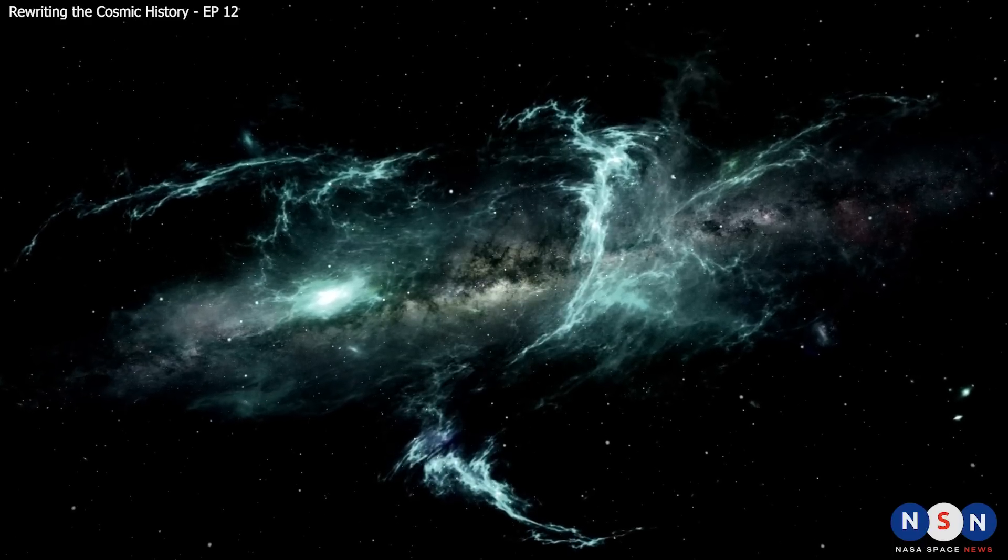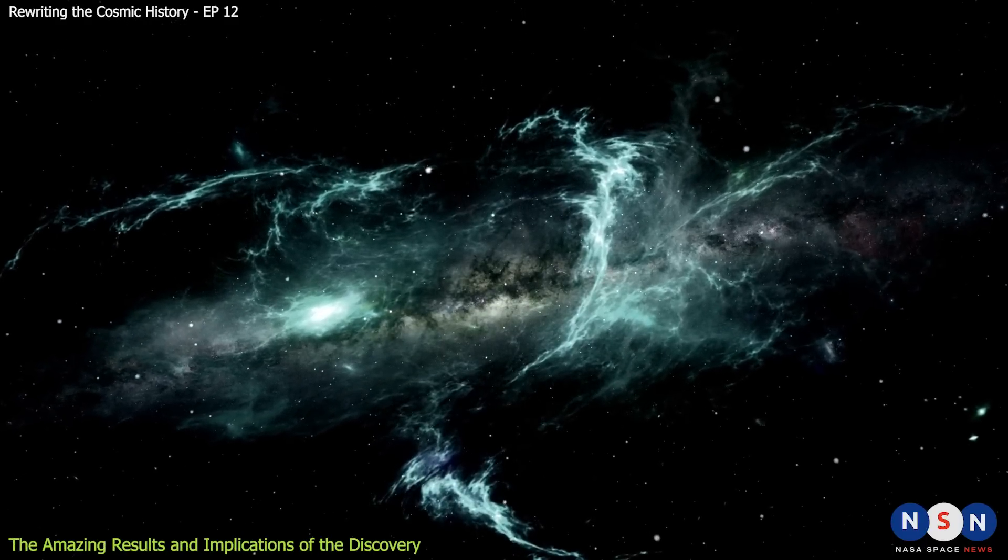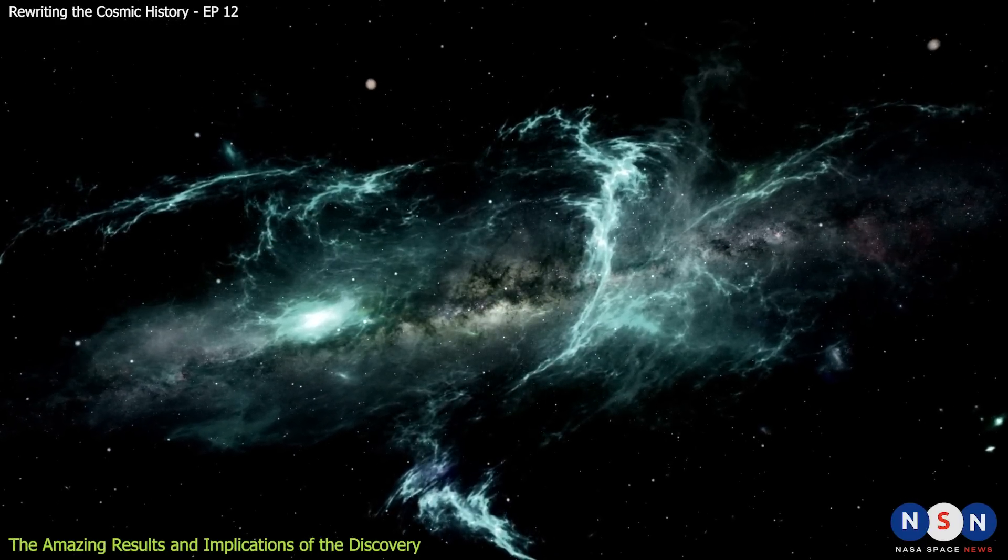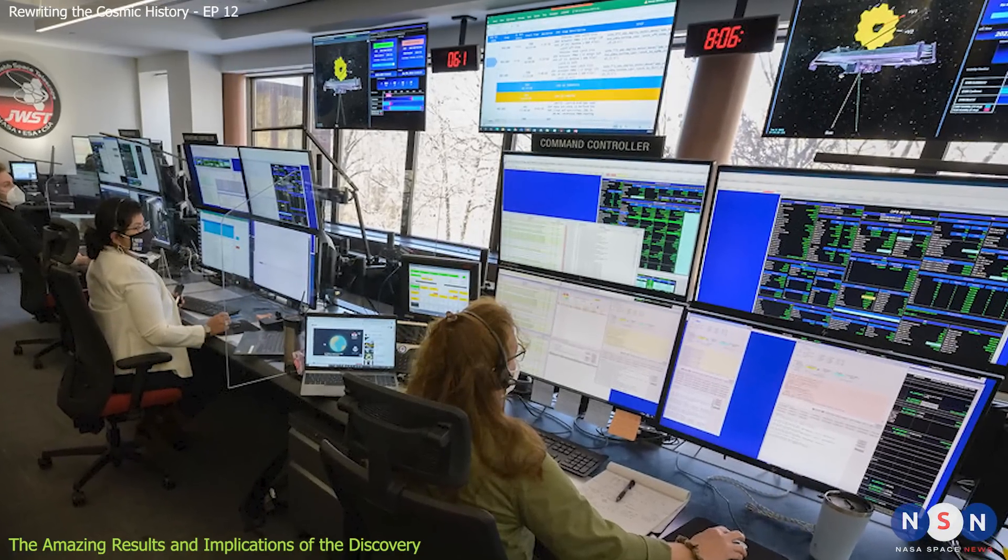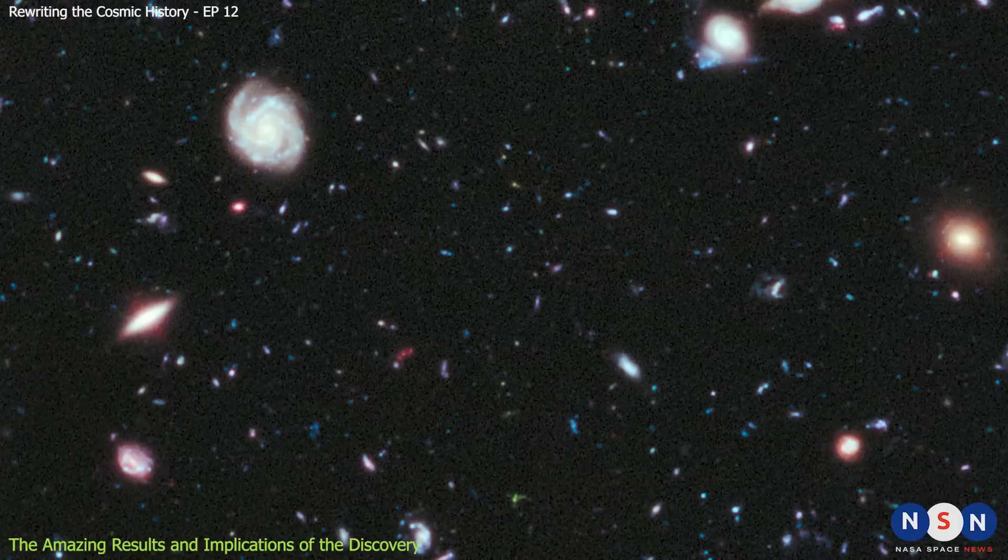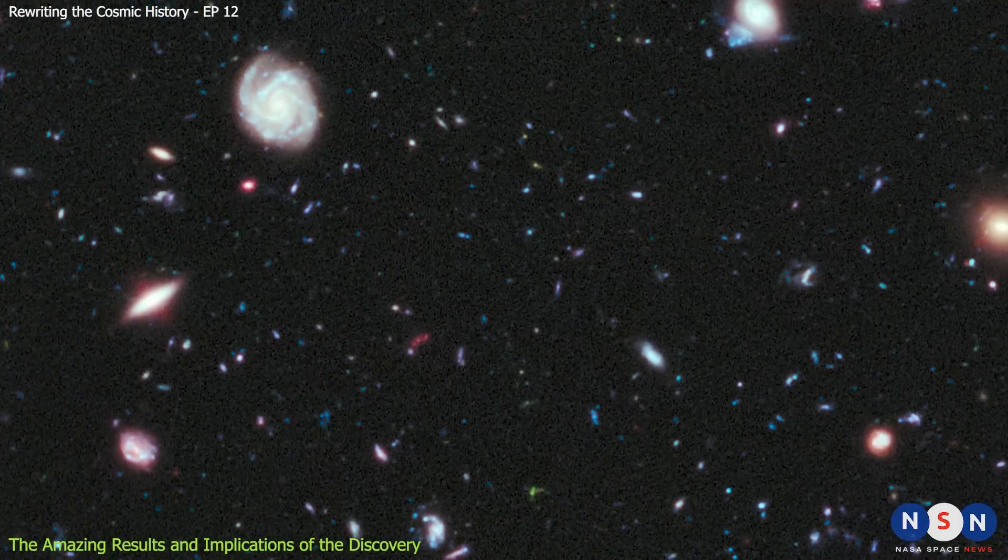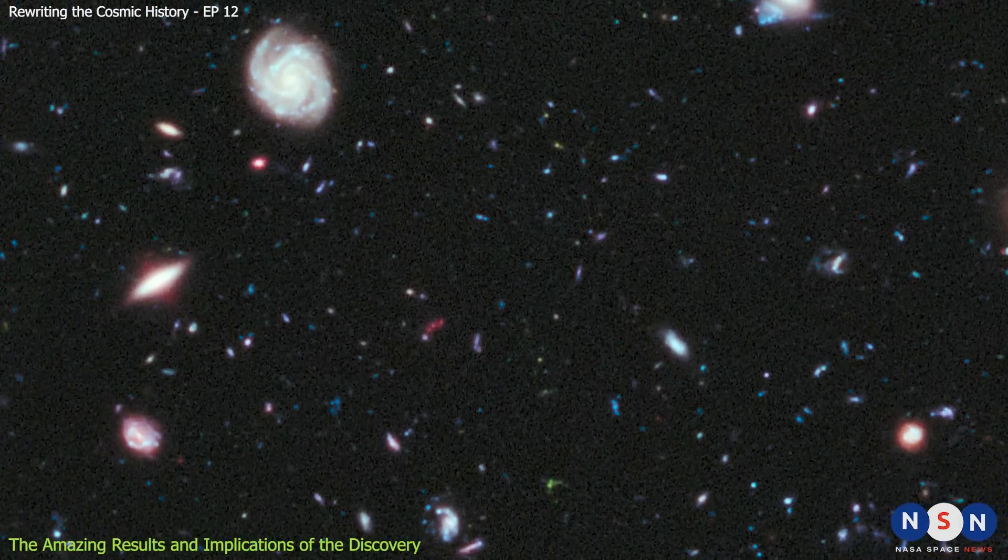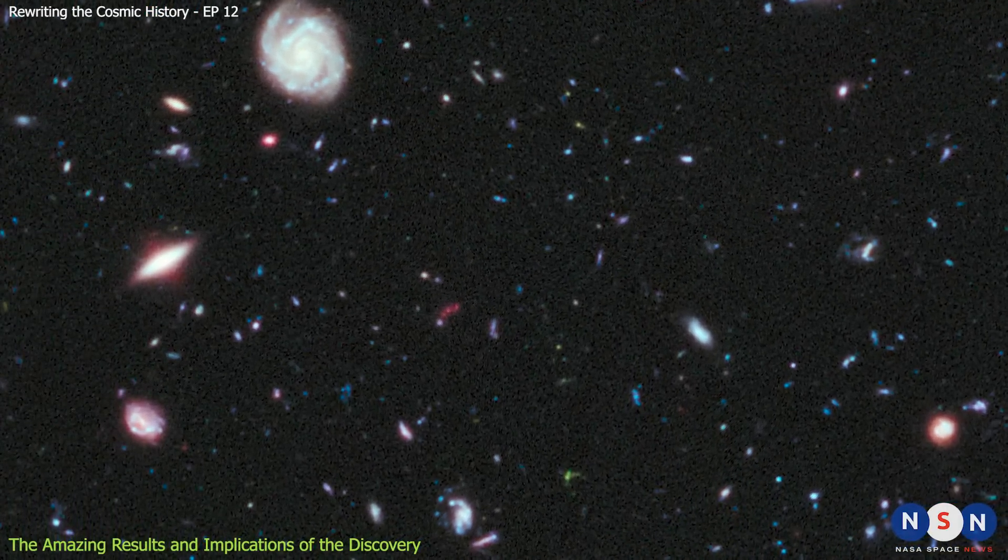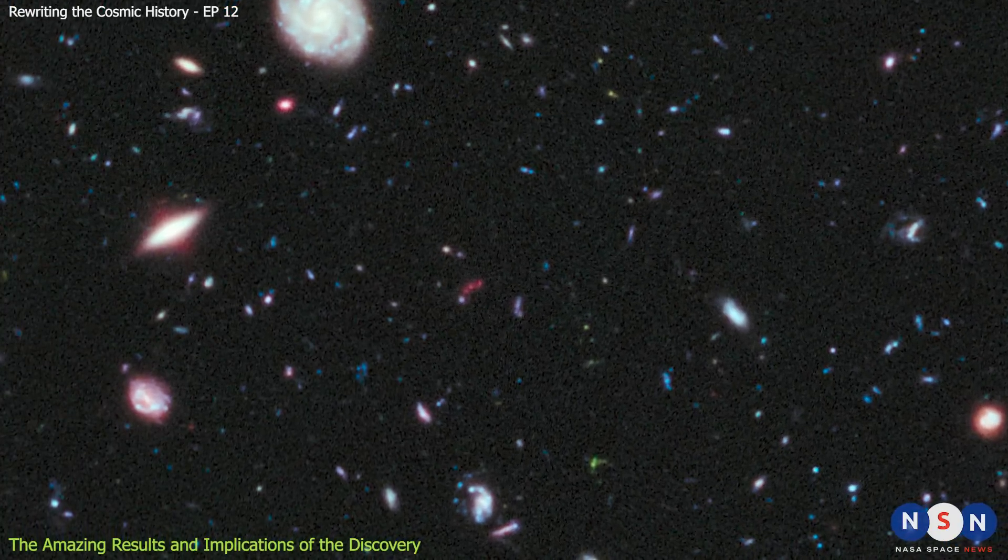The discovery of star formation in individual galaxies during cosmic dawn was not easy. It took a lot of time and effort by MIRI and its team of scientists. First, MIRI had to observe the James Webb Extreme Deep Field for a long time, about 40 hours. This was to collect enough light from the very faint galaxies in the field.